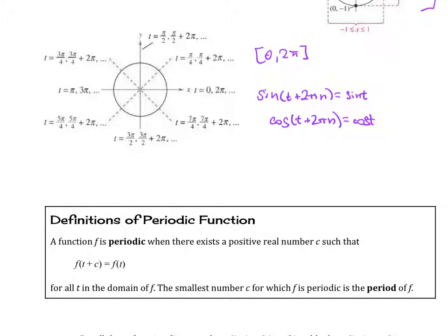Any function that behaves in a cyclical, repetitive pattern is called periodic. A function f is periodic when there exists a positive real number c such that f(t + c) equals f(t) for all t in the domain of f. The smallest number c for which f is periodic is the period of f.